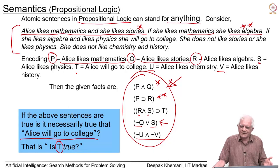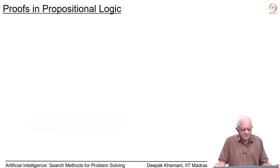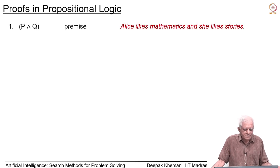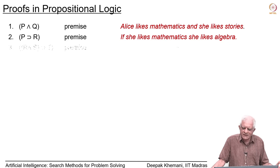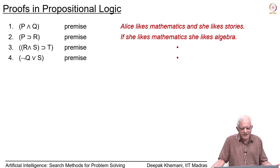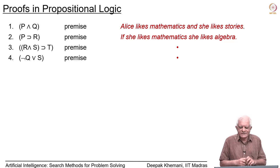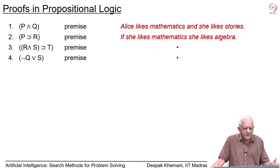We will accept that to mean that the sentence is true, because we have accepted our logic to be sound. Let us look at the notion of proofs in propositional logic. Some statements are given to us, and we accept them without questioning because they are the premises. These are the four statements we are interested in here — Alice likes mathematics, she likes stories, and so on. We are interested in showing that T is true.